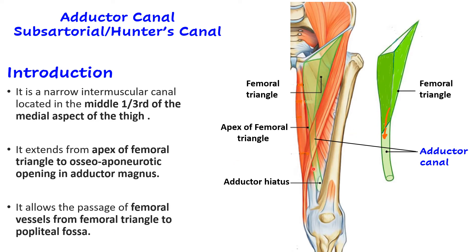The main function of the adductor canal is to allow the passage of femoral vessels from the femoral triangle to the popliteal fossa. The femoral vessels run in the femoral triangle, and at the apex where the adductor canal begins, they pass through it, then through the adductor hiatus to reach the posterior aspect — the popliteal fossa. The femoral triangle has a funnel shape and is continuous at its apex with the adductor canal.